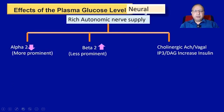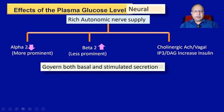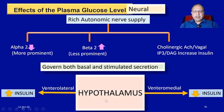For neural control, there is a rich autonomic nerve supply to the pancreas. Alpha-2 activity is more prominent than beta-2, and cholinergic or acetylcholine — vagal mechanisms — cause an increase in insulin. Autonomic nerve supply governs both basal and stimulated secretion. In the hypothalamus, ventromedial stimulation causes a decrease in insulin secretion, while ventrolateral stimulation causes an increase.